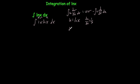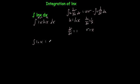Our dv/dx is equal to 1, so that means v, if we integrate that, is equal to x. We're now going to substitute these into the formula. The integral of ln(x) equals u·v, which is ln(x)·x — so x·ln(x) — minus the integral of v·(du/dx), where v is x and du/dx is 1/x, so times 1/x, with respect to x.